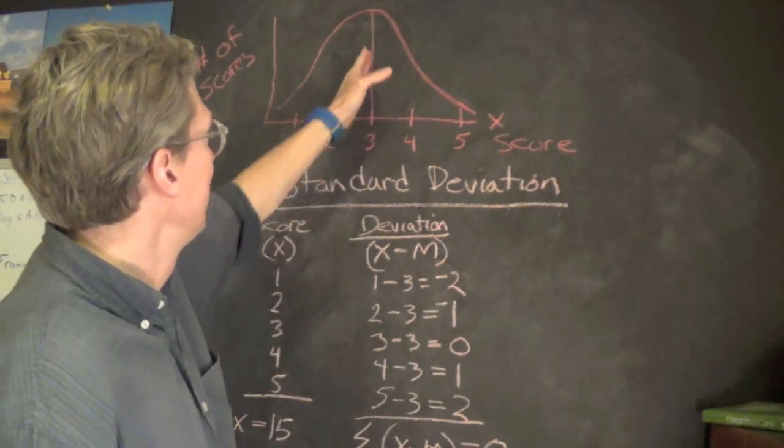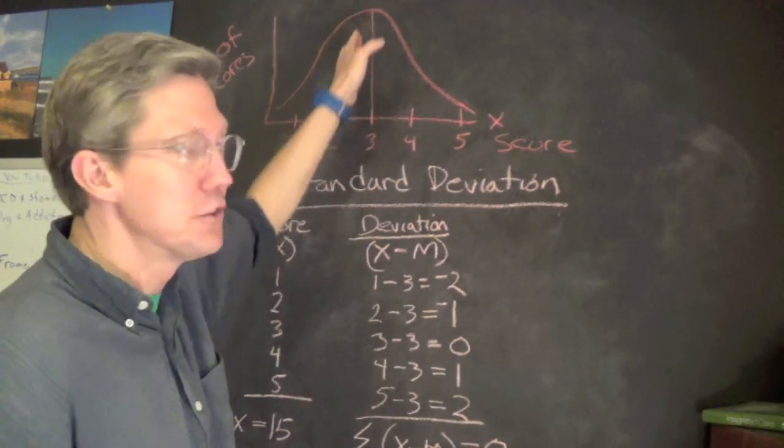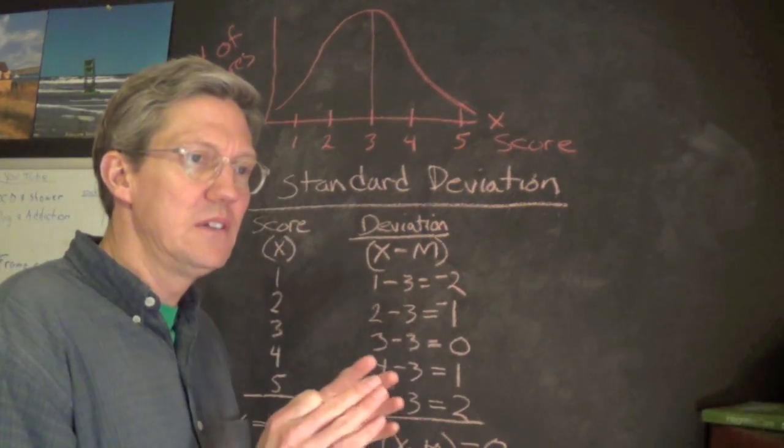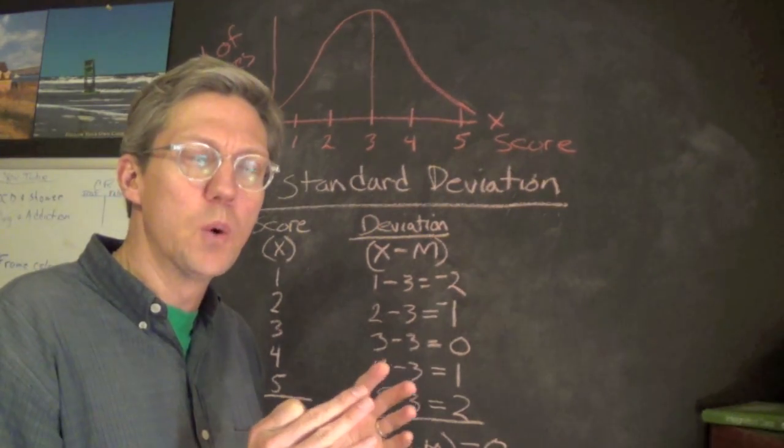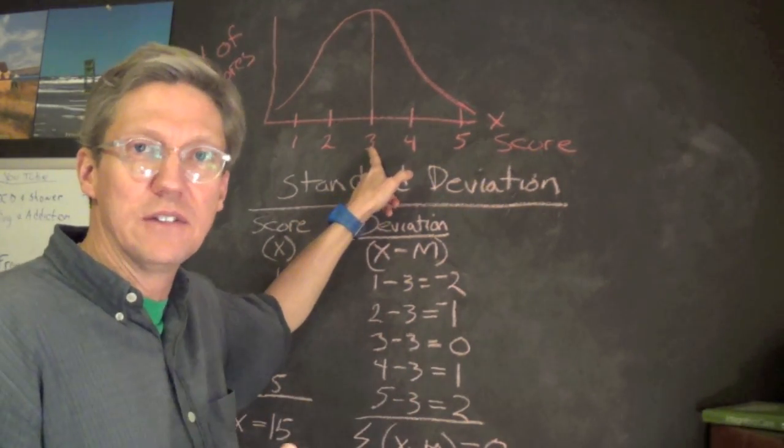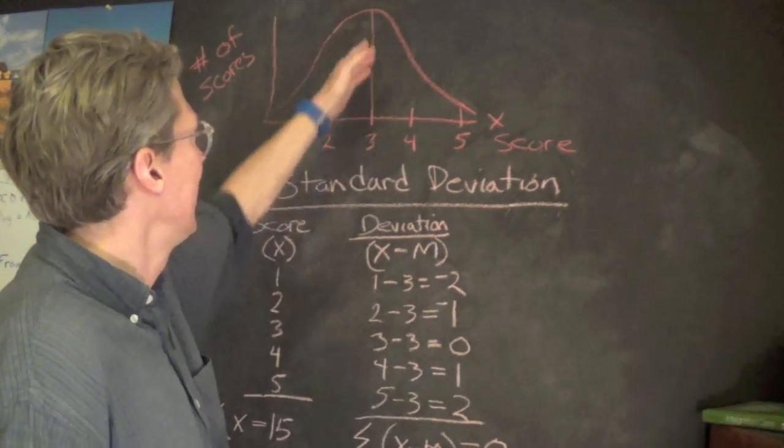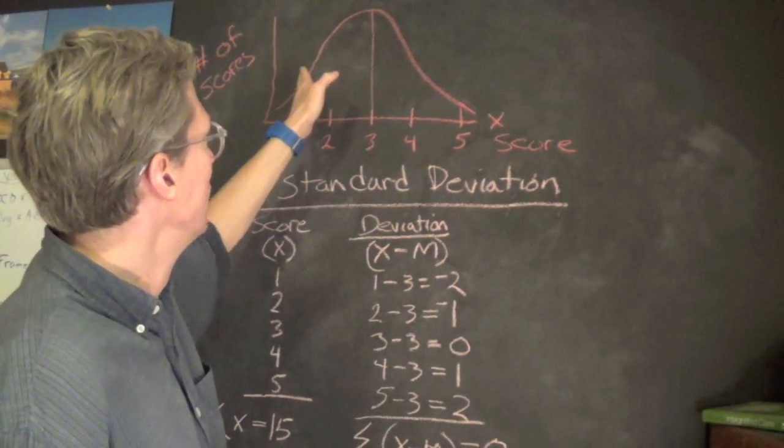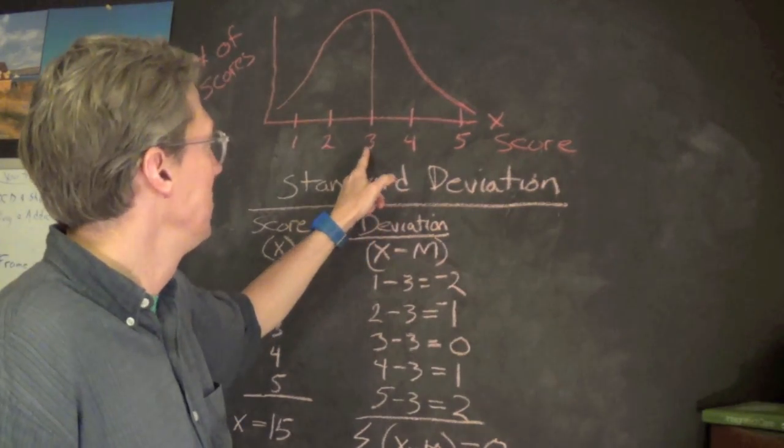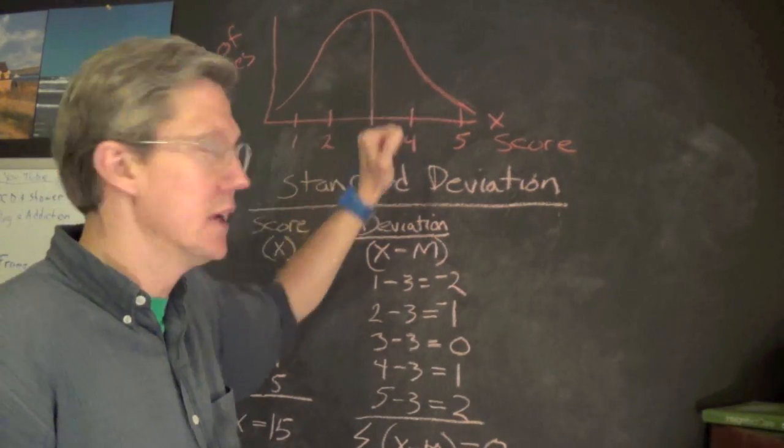It's helpful to know that central most figure. And then the next thing that's helpful is the degree to which the scores vary from the mean. And in fact, when we do have a normal distribution or a normal curve, the mean, median, and mode will be the same.